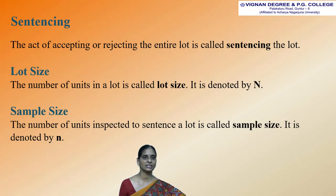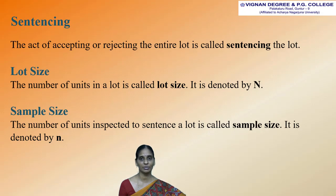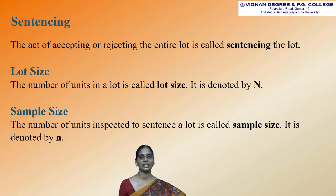The next term is lot size. The number of units in a lot is called lot size. It is denoted by capital N. The next term is sample size. The number of units inspected to sentence a lot is called sample size.